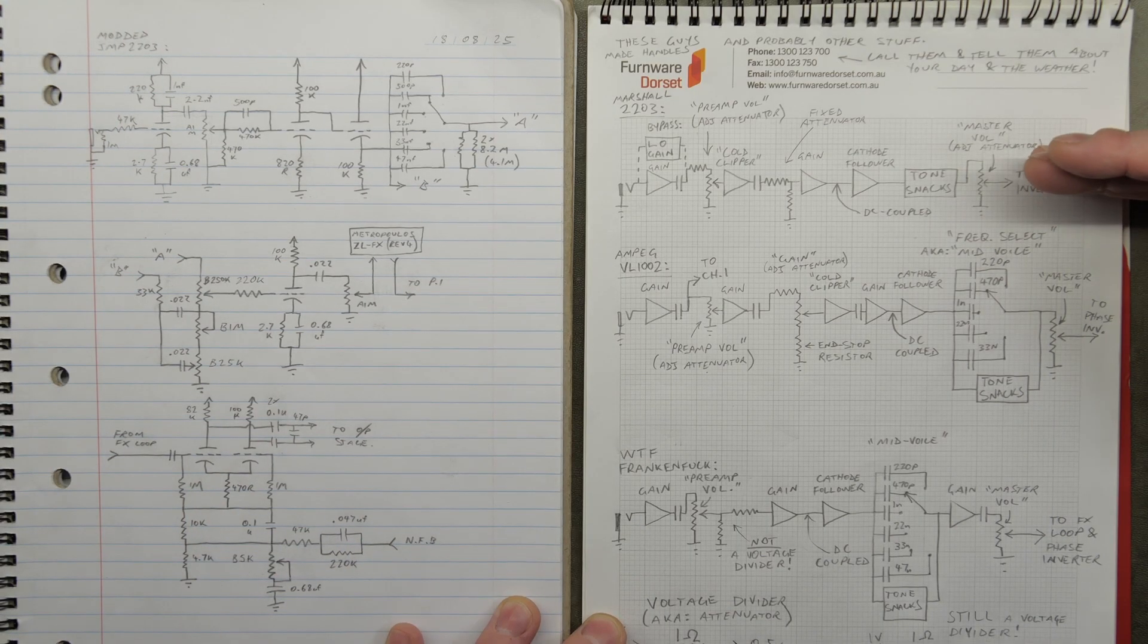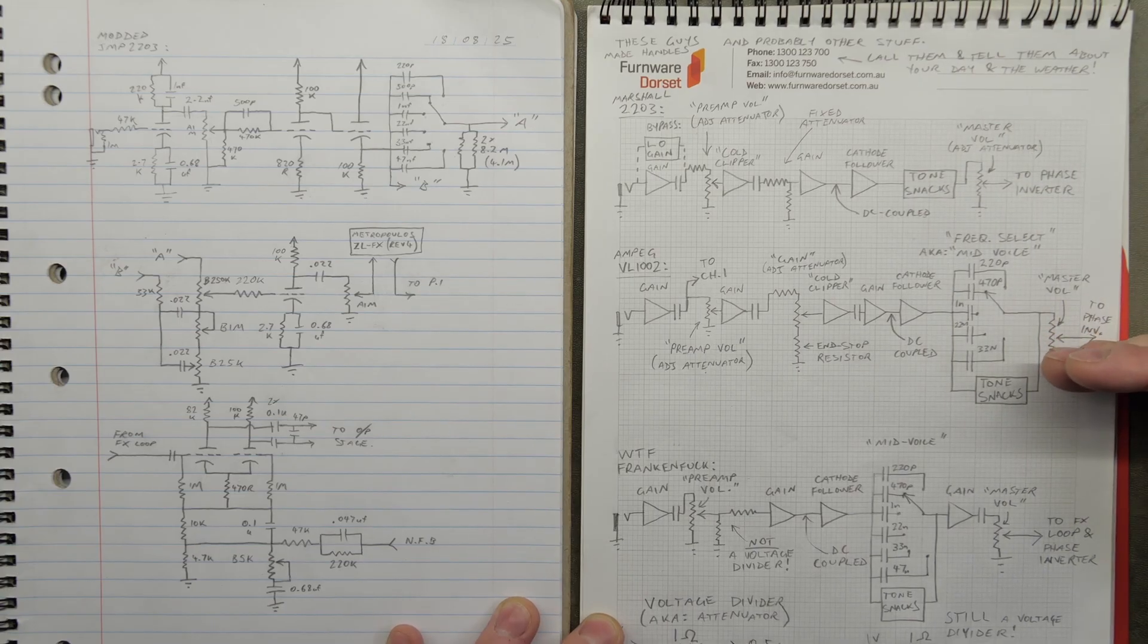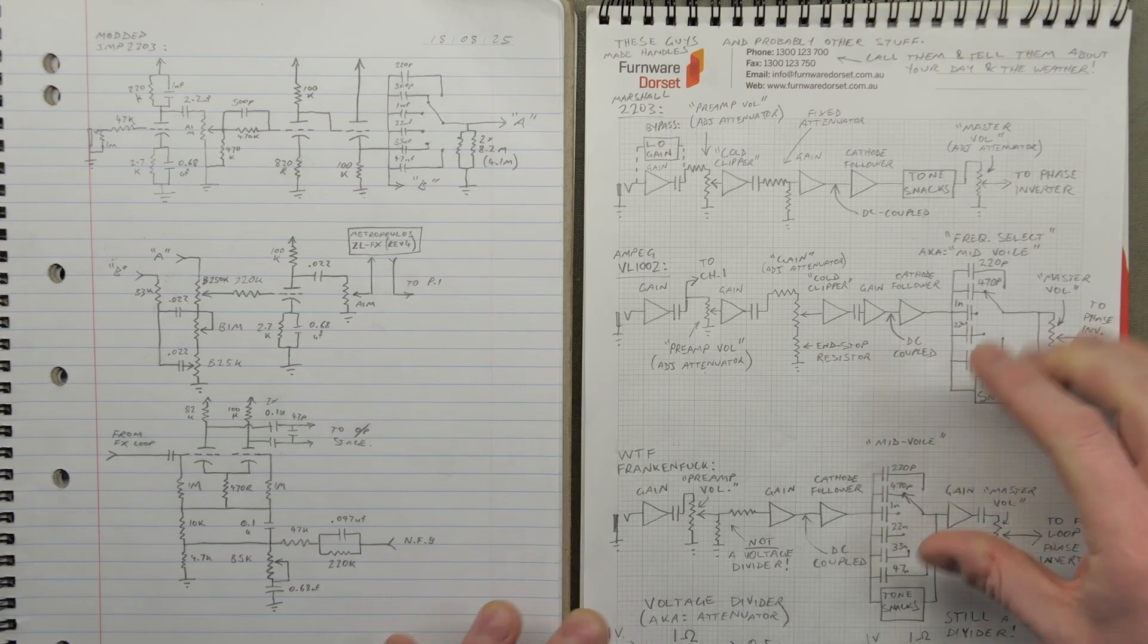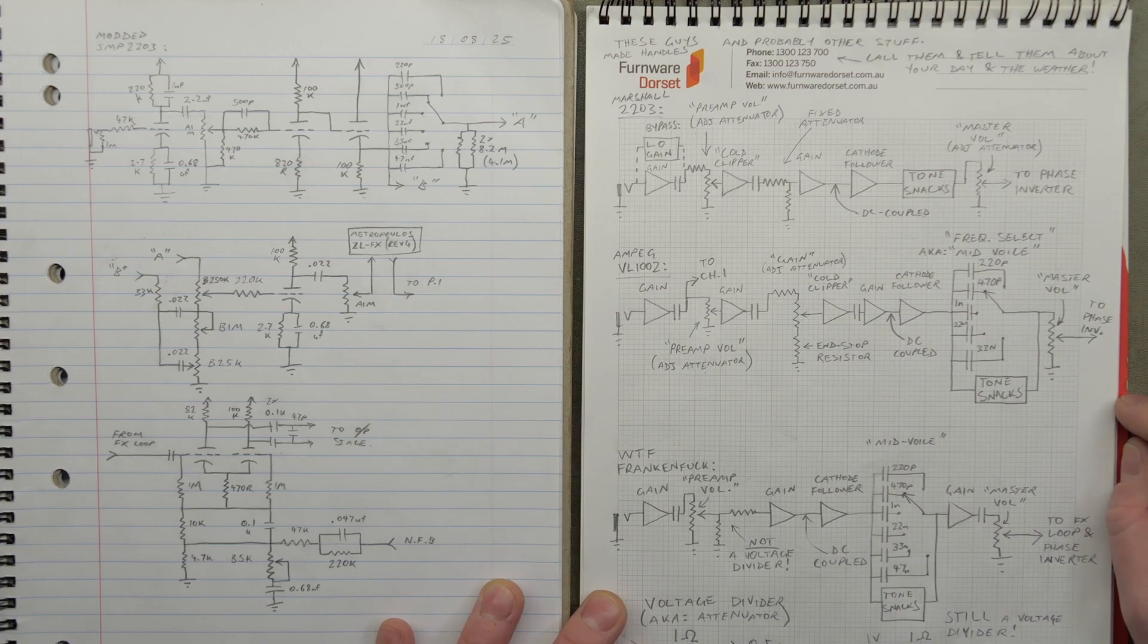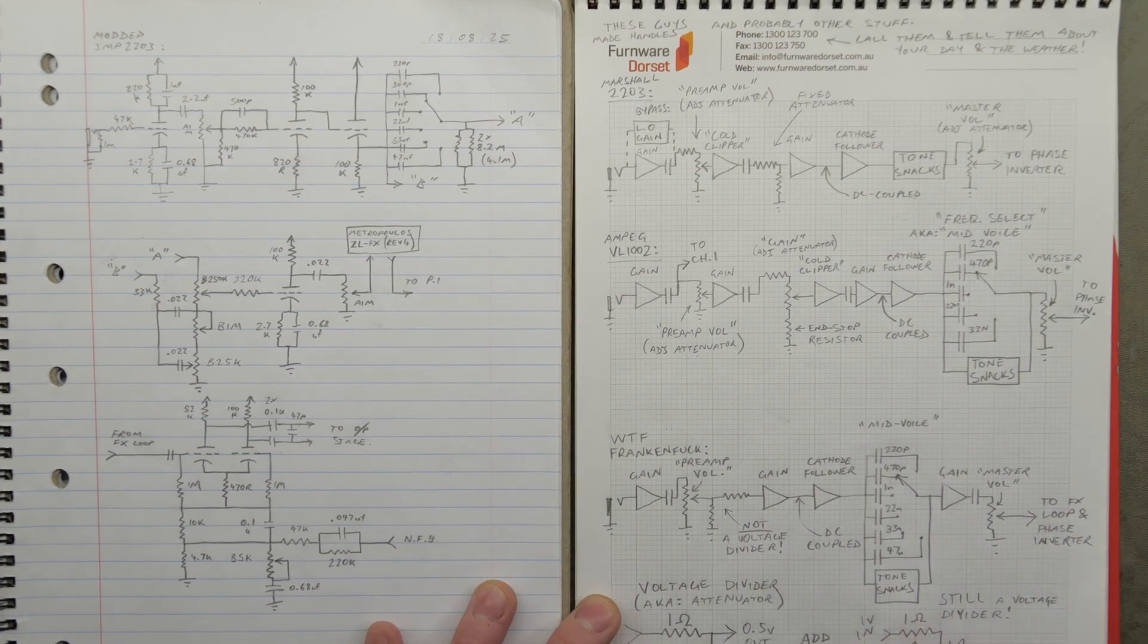So here's a flowchart of the 2203, simplified heavily. Flowchart of the AMPEG VL1002, which is just one of the amps I've seen in person, which has this mid voice selection switch, and the WTF amp as it came in.